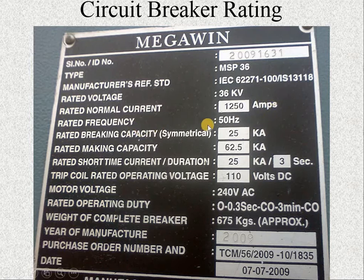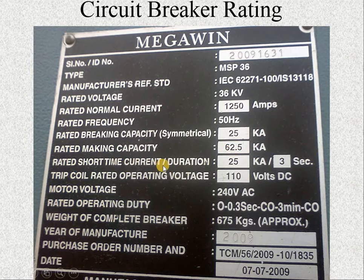The rated frequency is 50 Hz. The rated breaking capacity for symmetrical is 25 kA. The rated making capacity is 62.5 kA. The rated short time current is 25 kA for a duration of 3 seconds. The trip coil rated operating voltage is 110 V DC and the motor voltage required is 240 V DC.